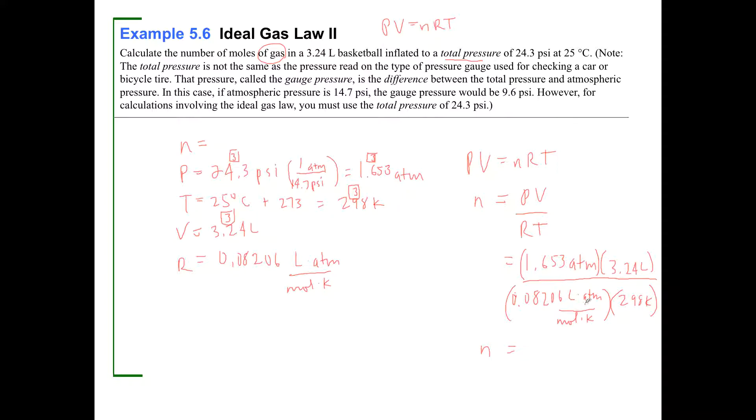So 1.653, let's cancel everything out here. It looks like atmospheres cancel, liters cancel, kelvins cancel. And I've got moles in the denominator of my denominator. So that's going to go up to the numerator. And I was asking, calculate the number of moles. So yeah, this is going to give us our correct answer. So I've got 1.653 times 3.24 divided by 0.08206 divided by 298. And that's going to give me 0.2190 moles.